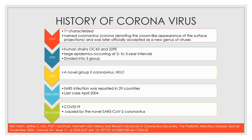It was divided into three groups. Group one and group two are human strain viruses, and group three was made up of avian infection, bronchitis virus, and a number of related avian viruses.